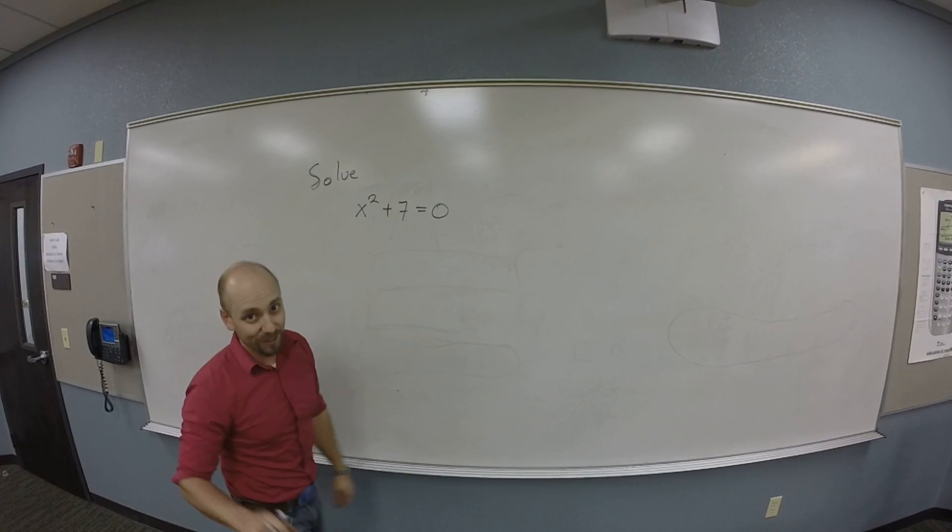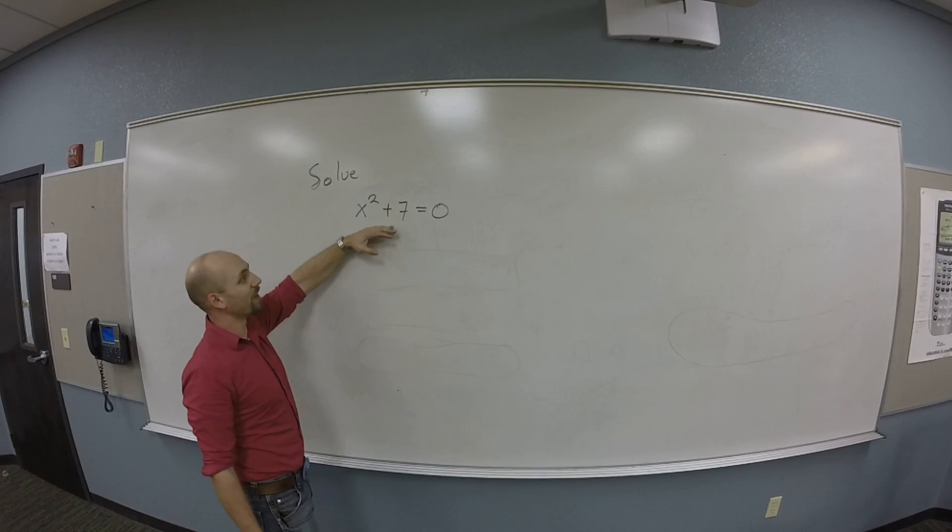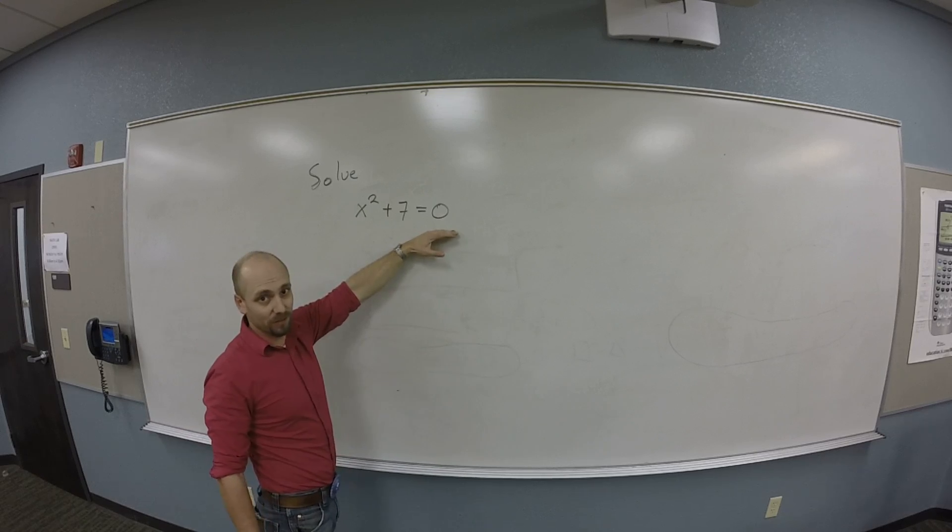So this one looks really similar to the last one I did. I have x² + 7 = 0, and I want to try to solve this.